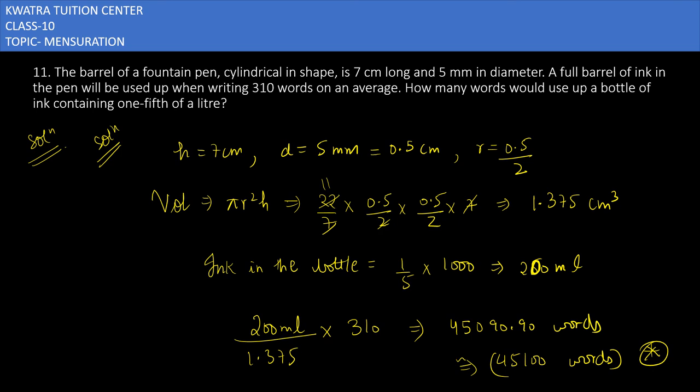to the nearest 200, it will be 45,100 words. That's the answer for the 11th question. 45,100 words can be written using the ink in the bottle.